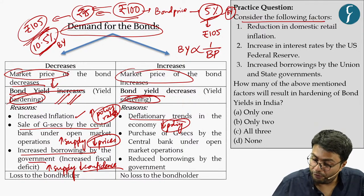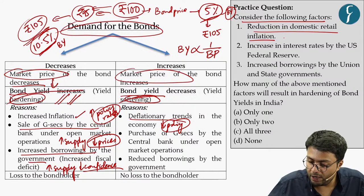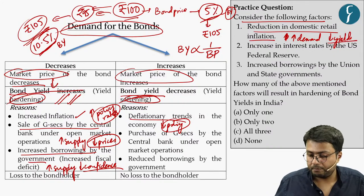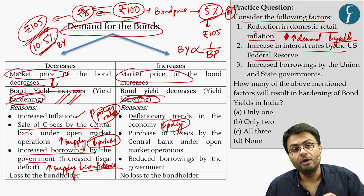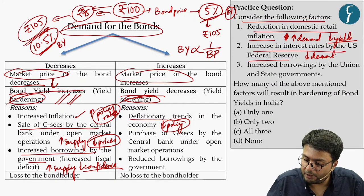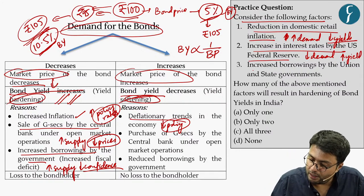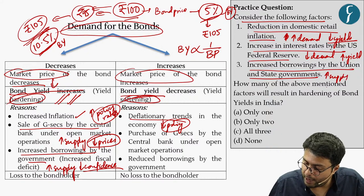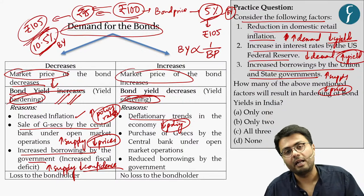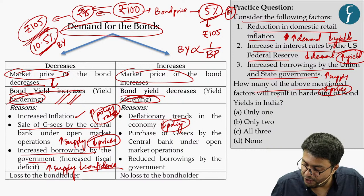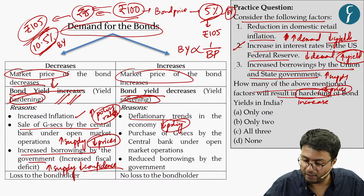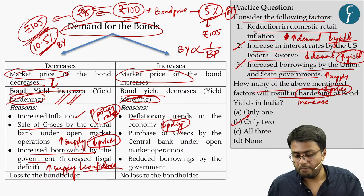For the practice question on bond yield — reduction in domestic retail inflation increases demand for bonds, raising prices and reducing yields. However, an increase in interest rates by the US Federal Reserve would reduce demand and prices of bonds in India, increasing bond yield. Therefore, factors 2 and 3 result in hardening of bond yield, making option B the correct answer.